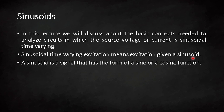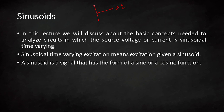A sinusoid is a signal that has the form of a sine or cosine function. We are all familiar with these functions. Let me draw a waveform of a sine function. Here is our time axis, and the voltage signal changes with respect to time. The shape of the sinusoidal signal shows zero, pi, and two pi — this is the fundamental sinusoidal signal.